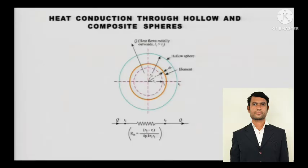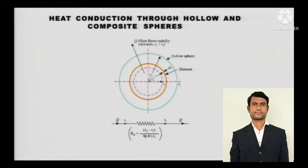Heat conduction through hollow and composite spheres. So far we have covered slabs and composite cylinders. Now we are talking about the composite sphere — starting with the hollow sphere, then adding layers to make it composite. The resistance value will change accordingly.